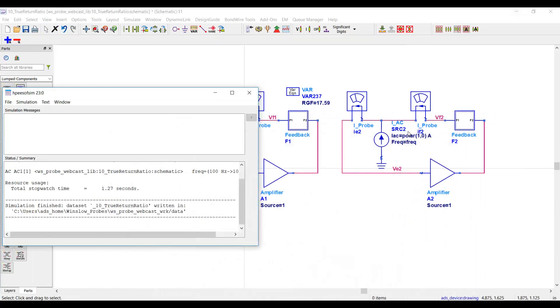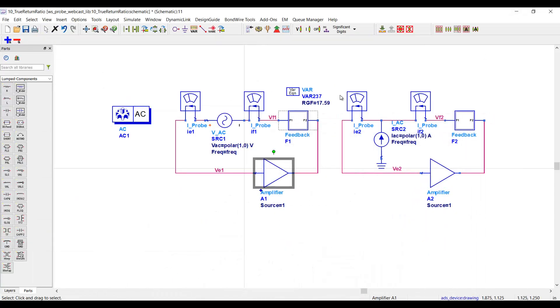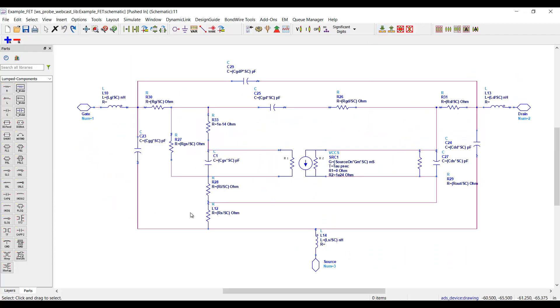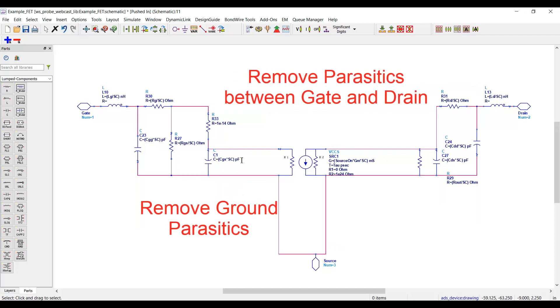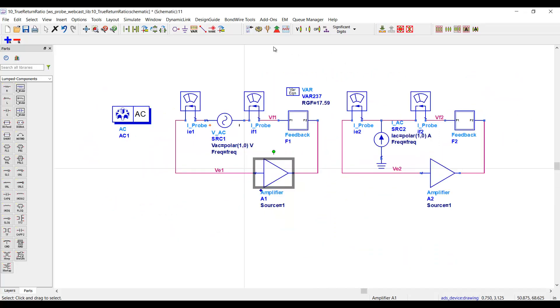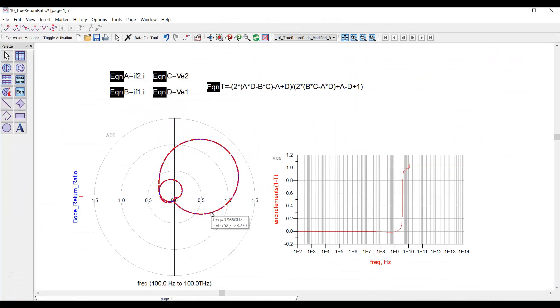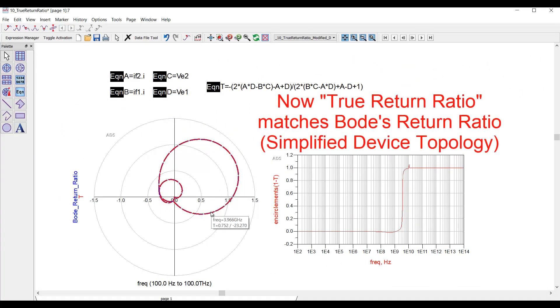I think it's instructive first to examine why the results don't agree. So I played around some with the simulation and I found that if you simplify the device model, you can actually get the True Return Ratio and the Bode Return Ratio to agree perfectly. I found I needed to remove the source parasitics and the internal feedback parasitics between the input and output of the transistor terminals. And once I did that, the True Return Ratio will match Bode's return ratio for the same case. Of course, the circuit is significantly modified, but the results match. So why is this the case?